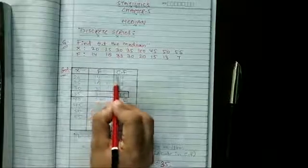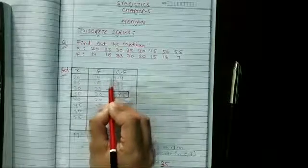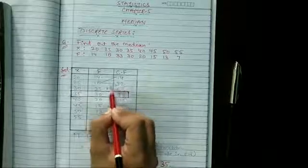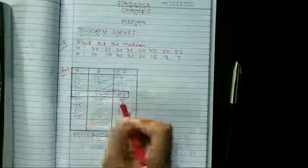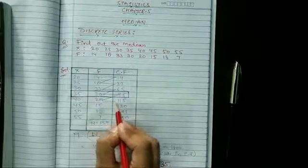How we will find cumulative frequency? First frequency will remain same 14, then 14 plus 18 we will get 32, 32 plus 33 equals 65, 65 plus 30 equals 95, 95 plus 20 equals 115.